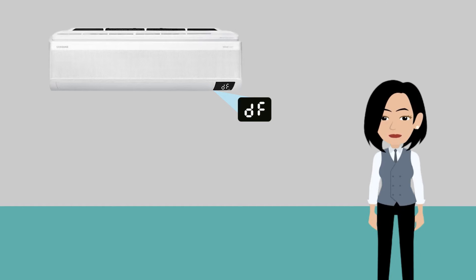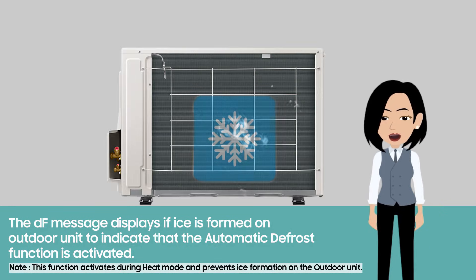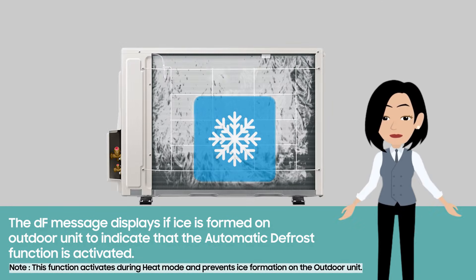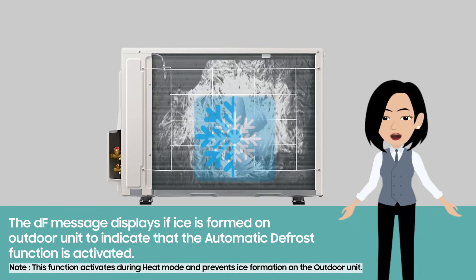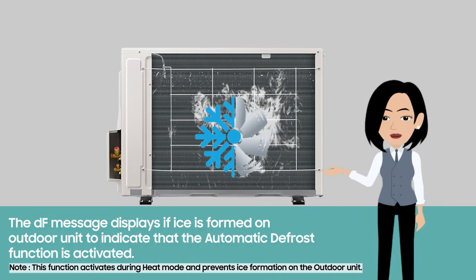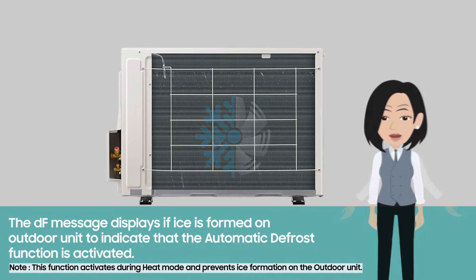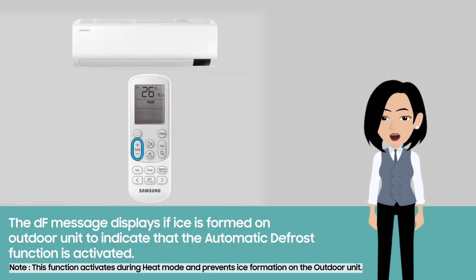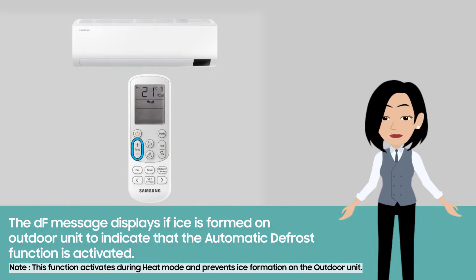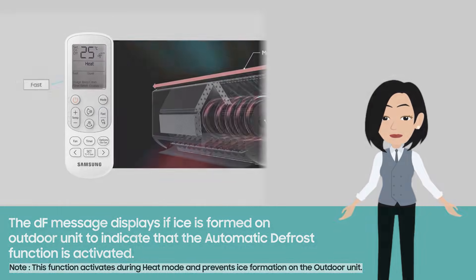The DF message displays if ice is formed on the outdoor unit, indicating that the automatic defrost function is activated. Please note, this function activates during heat mode and prevents ice formation on the outdoor unit.